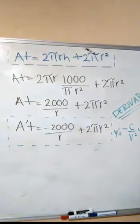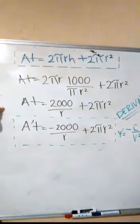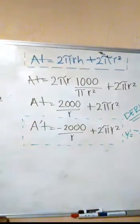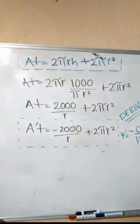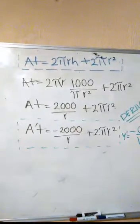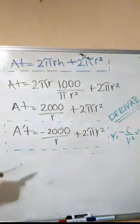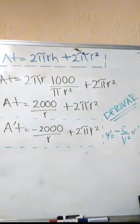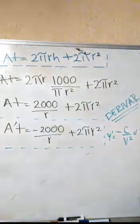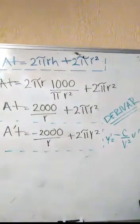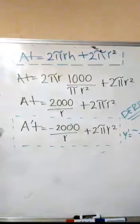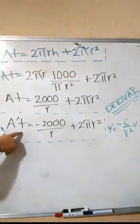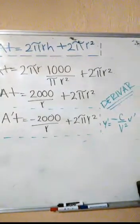Ahora lo que tenemos que hacer es derivar para hallar mi valor crítico. La fórmula que utilizaremos es y' es igual a menos constante sobre el variable al cuadrado por la variable al cuadrado. Y nos queda como resultado que la derivada del área total es igual a menos 2000 sobre r más 2πr cuadrada.